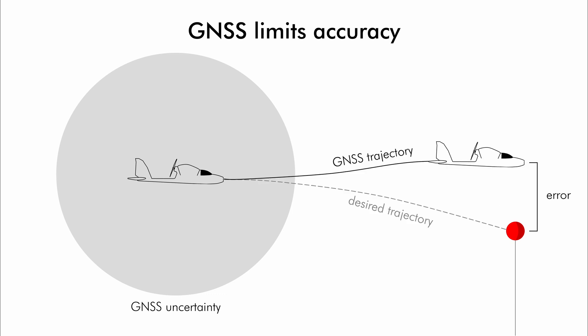However, current GNSS receivers limit fixed-wing navigation accuracy to several meters in outdoor environments, making such maneuvers impossible.